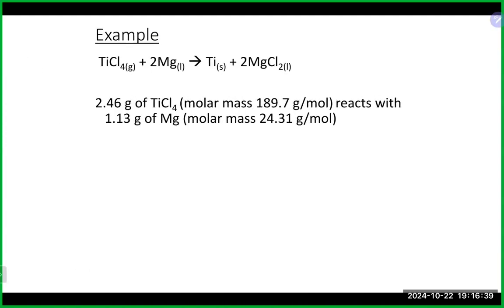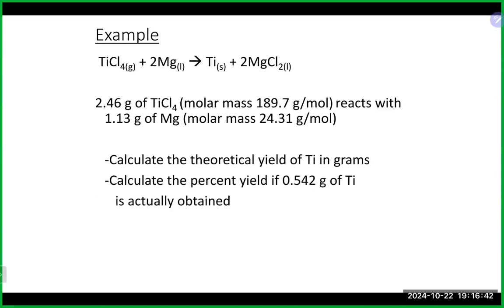Let's try one. We have this reaction: 2.46 grams of TiCl₄ with a molar mass of 189.7 grams per mole reacts with 1.13 grams of magnesium, molar mass 24.31. We want to know the theoretical yield of Ti in grams, and also the percent yield if we produce 0.542 grams of Ti. Ti from the periodic table is 47.88 grams per mole.